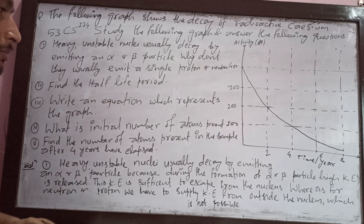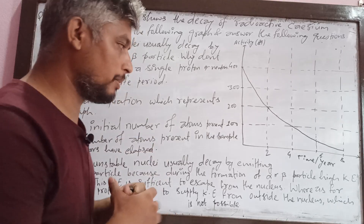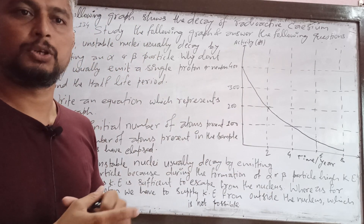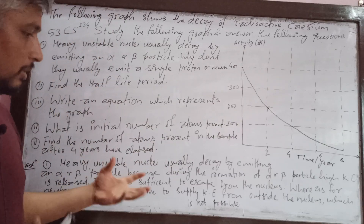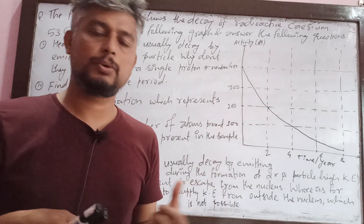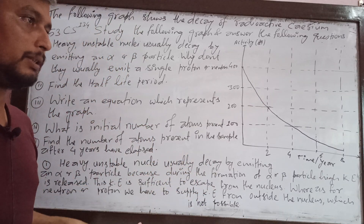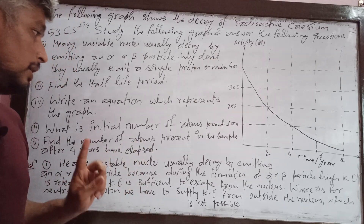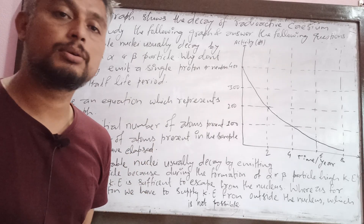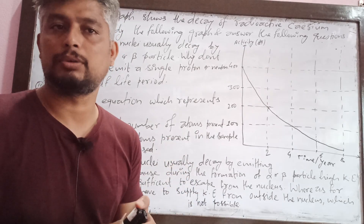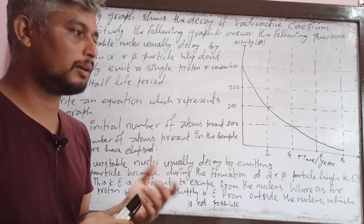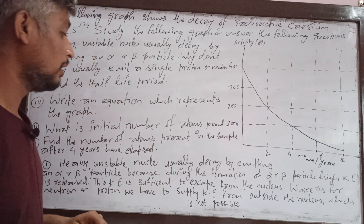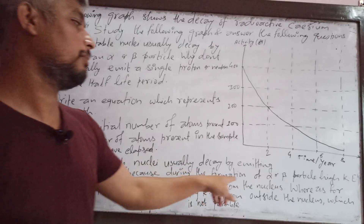If you have unstable nuclei, when radioactivity occurs, in the stable state, alpha or beta particles form and are released. That's why a single proton or neutron is not emitted — alpha or beta particles are released instead.